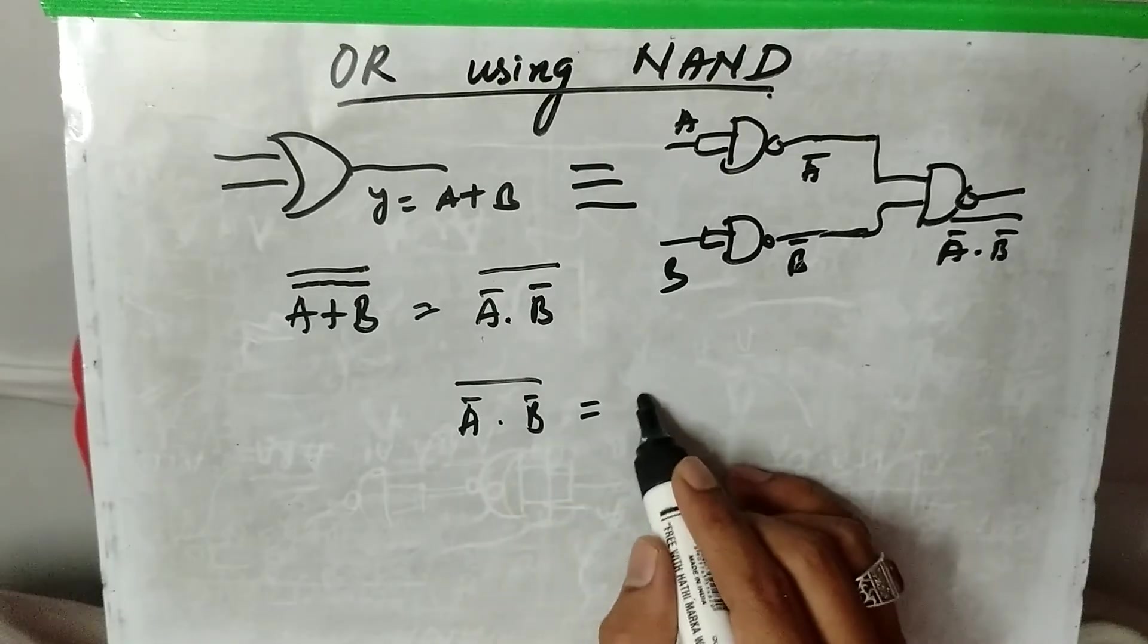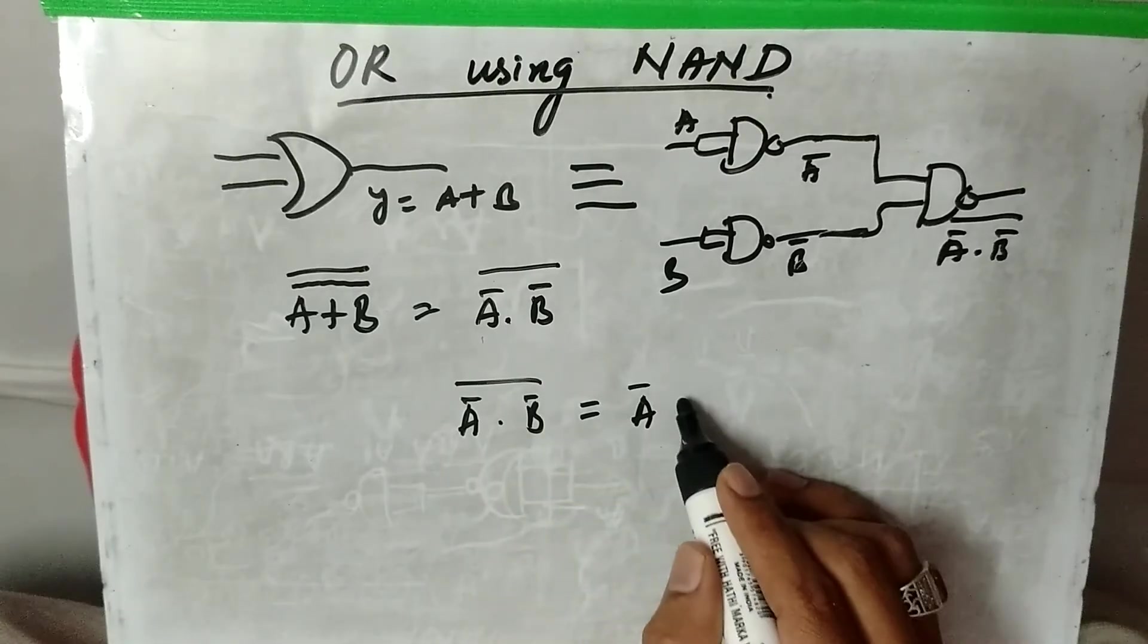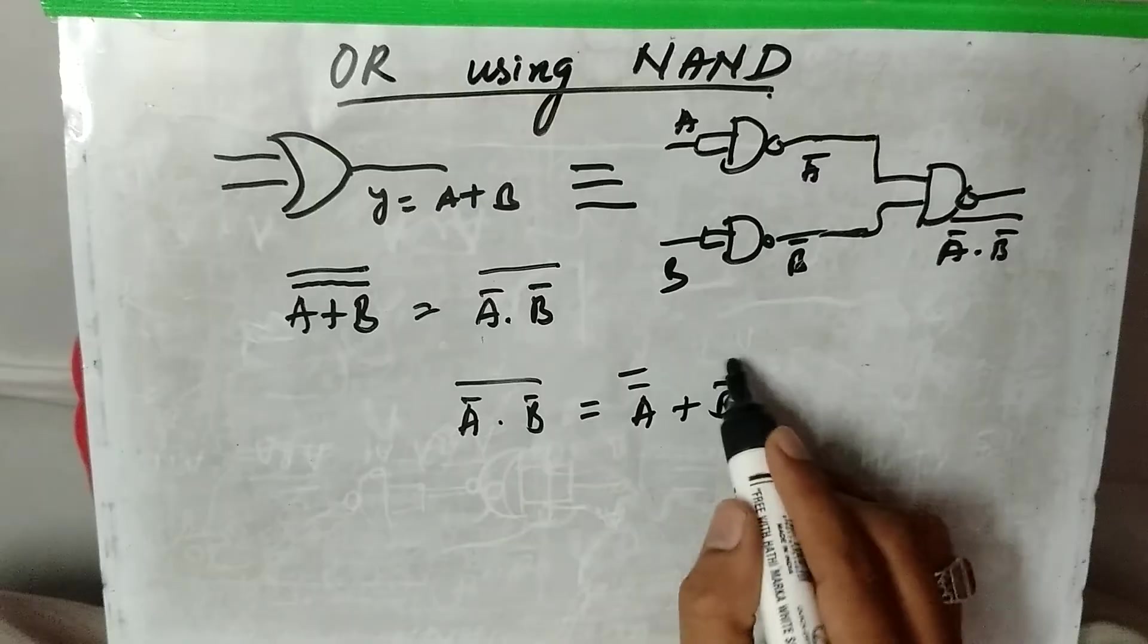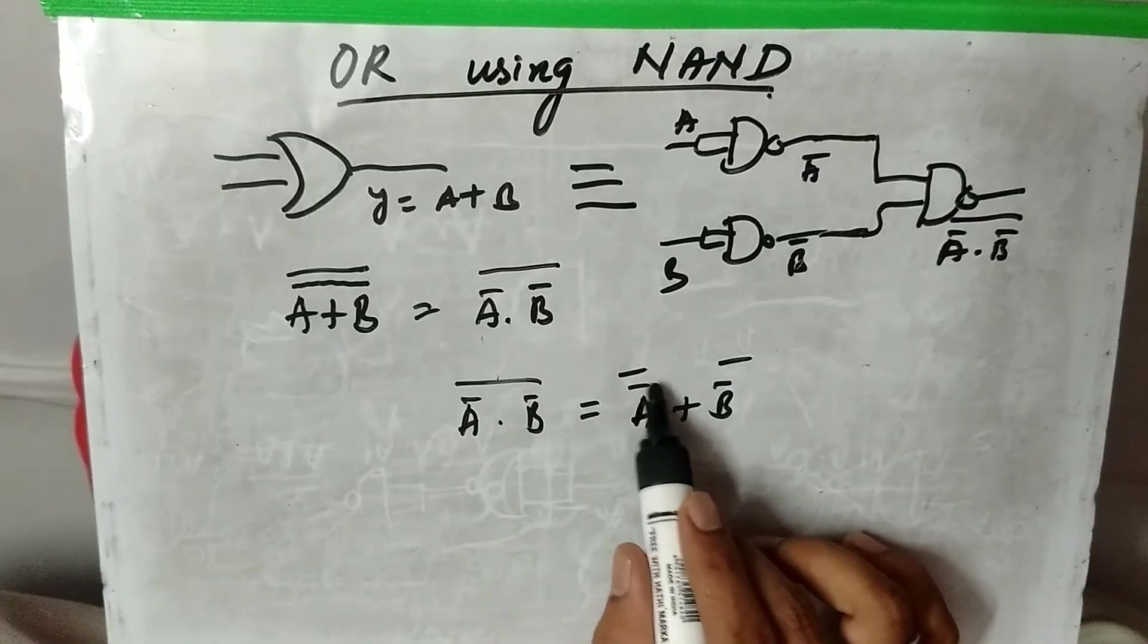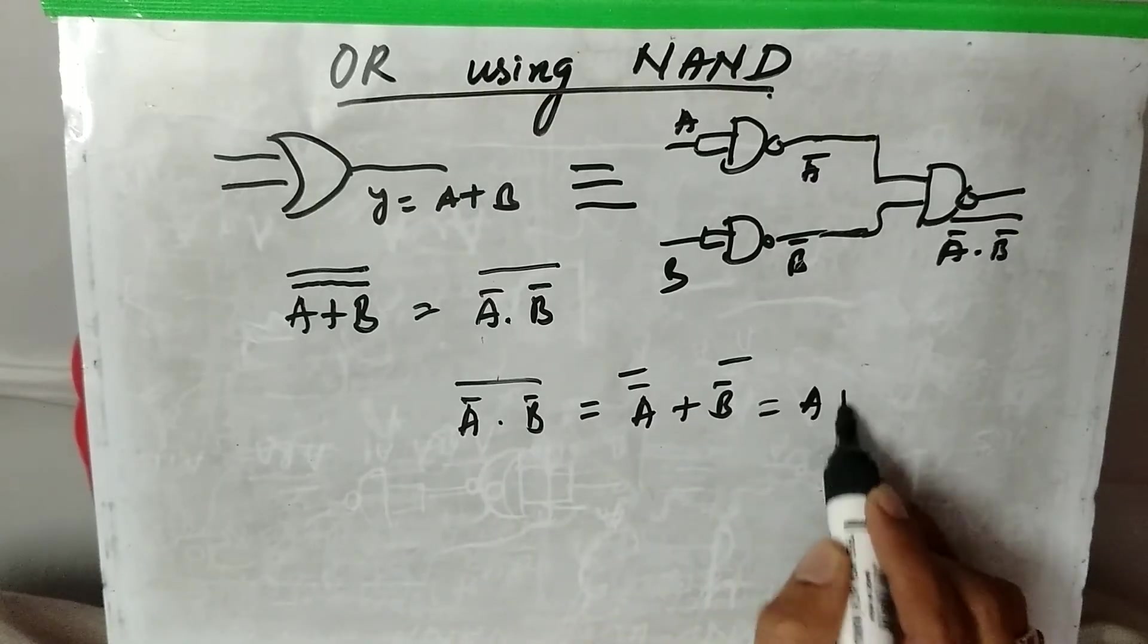If you again open this using De Morgan's theorem, A bar dot B bar whole bar equals A double bar plus B double bar, which gives you A plus B.